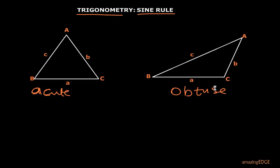In these two triangles, the capital letters represent angles: angle A, angle B, and angle C. The small letters represent the sides. Side a is the side facing angle A, side b is the side facing angle B, and side c is the side facing angle C.